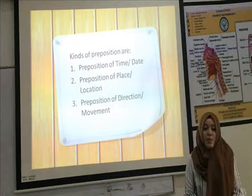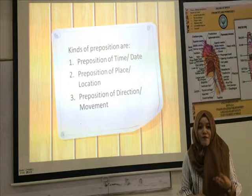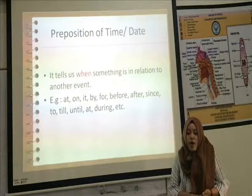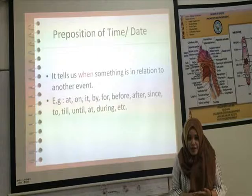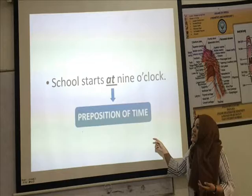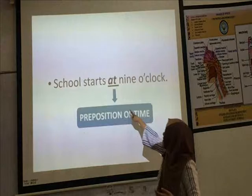I would like to tell you about the kinds of preposition. There are three kinds of preposition. The first is preposition of time or date, which tells when something is in relation to another event. The prepositions are: at, on, if, by, for, during, any day or time. For example: school starts at 9 o'clock. 'At' here is a preposition of time.